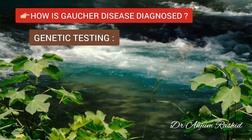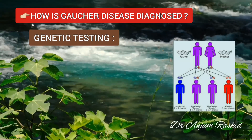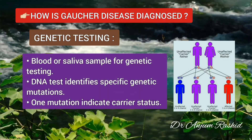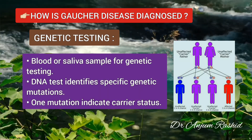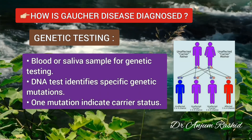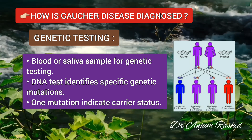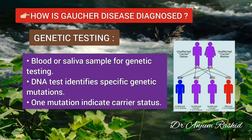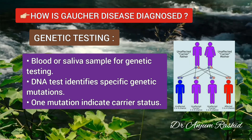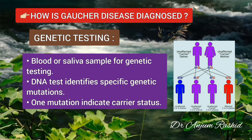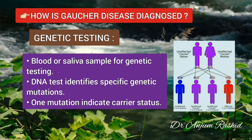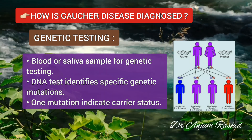Next is genetic testing. Physicians use a blood or saliva sample for genetic testing. This DNA test indicates a patient's specific genetic mutation, and just one mutation indicates carrier status.